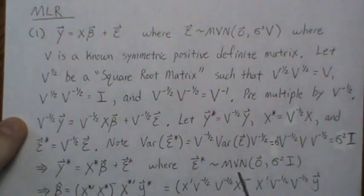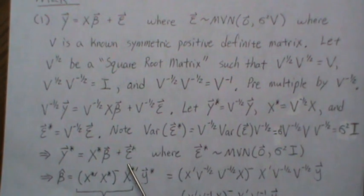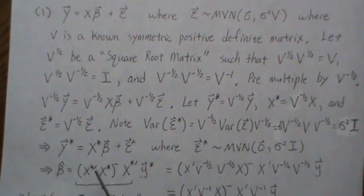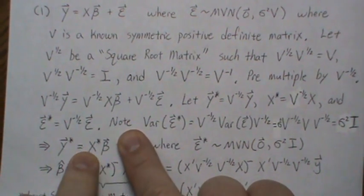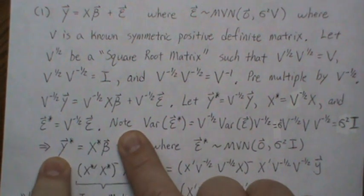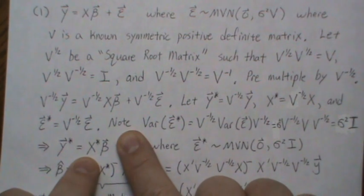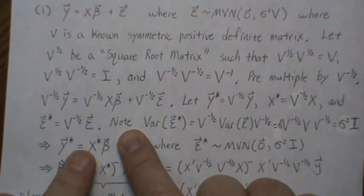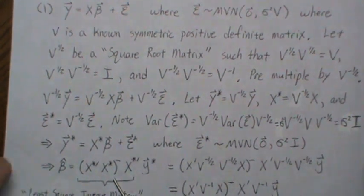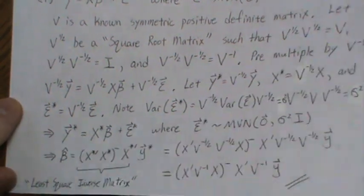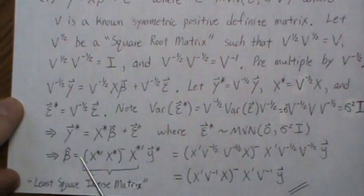Now ε* is multivariate normal with mean zero and variance σ²I, so this fits the standard linear regression model and we can use ordinary least squares. Since X* may not be full column rank, we create what's called a least squares inverse matrix. This step is standard and I won't review it here — I have a video called 'Least Squares Inverse Matrix' you can look up. We pre-multiply both sides and isolate β.